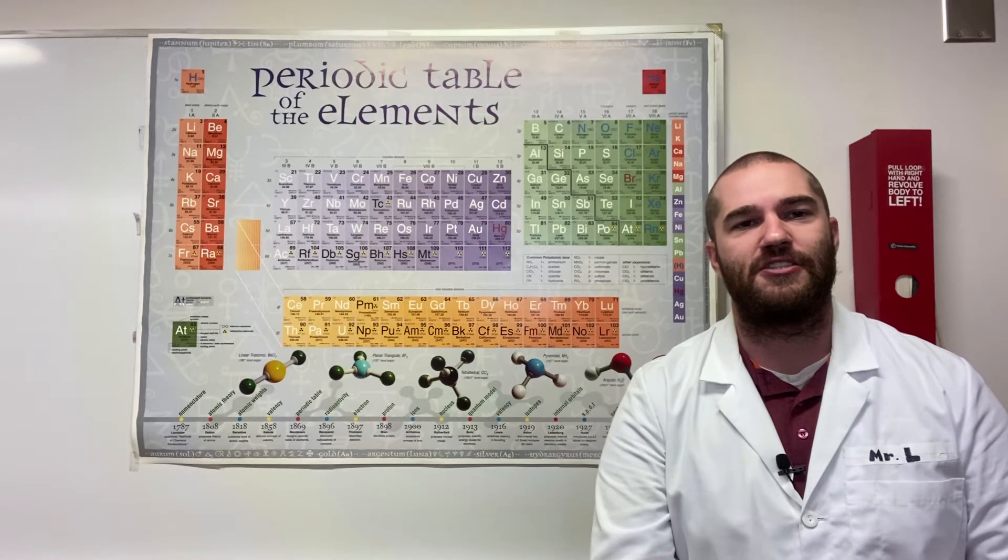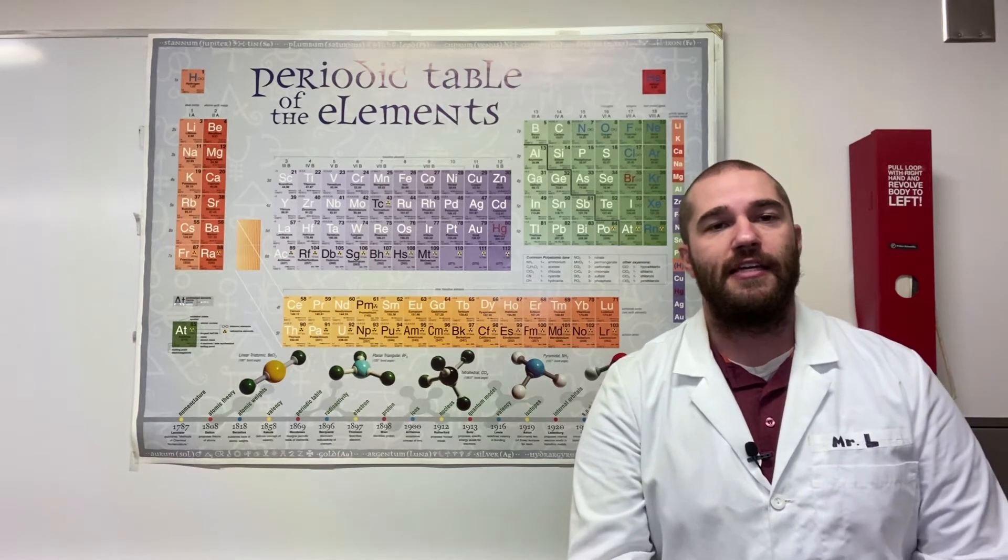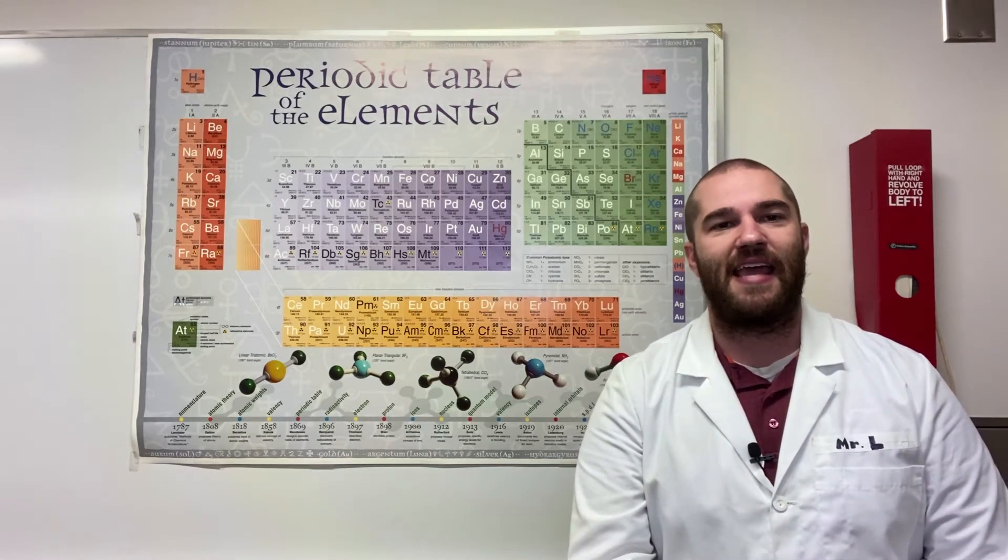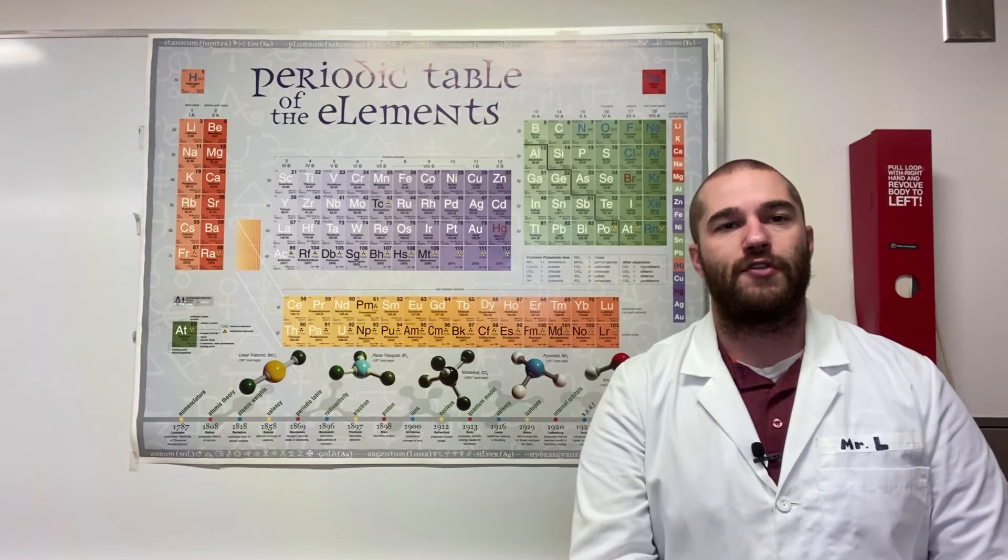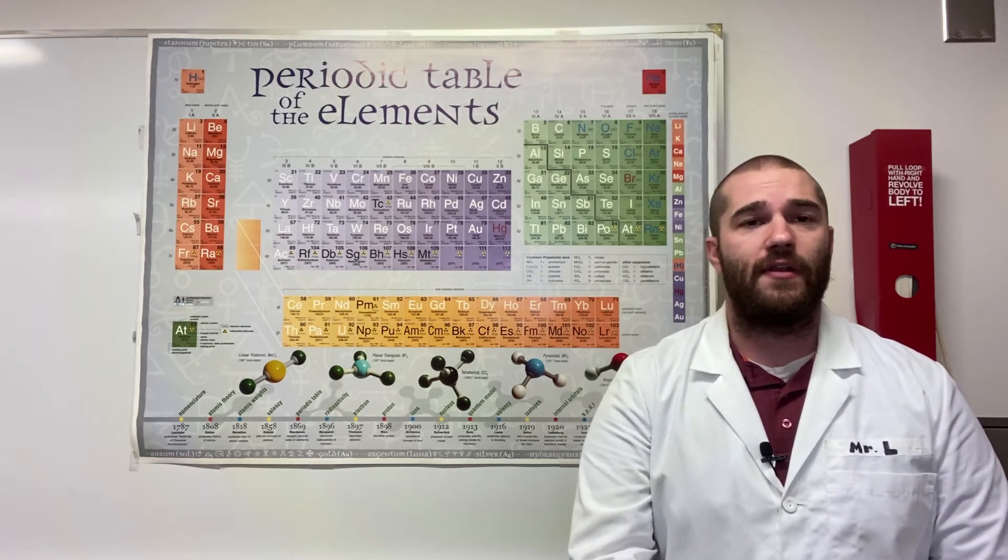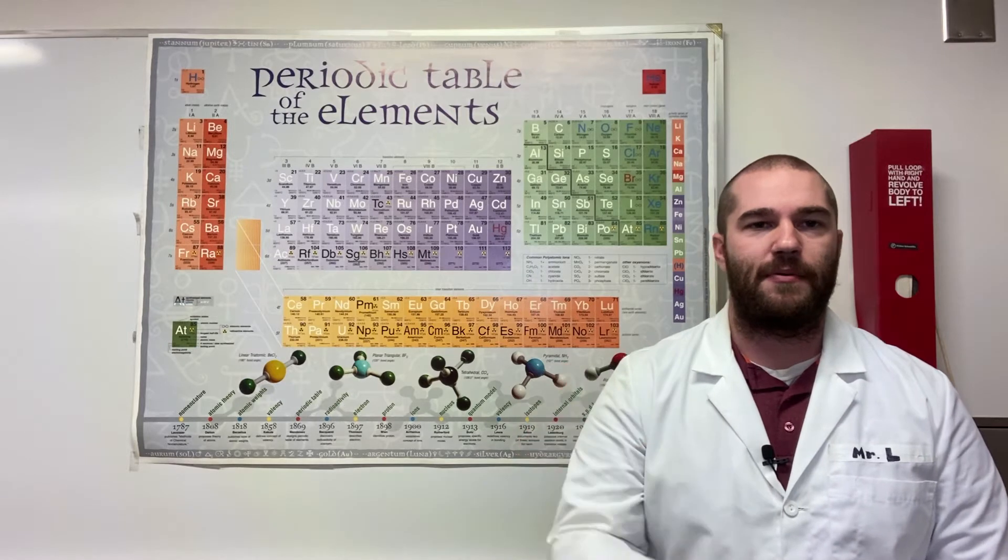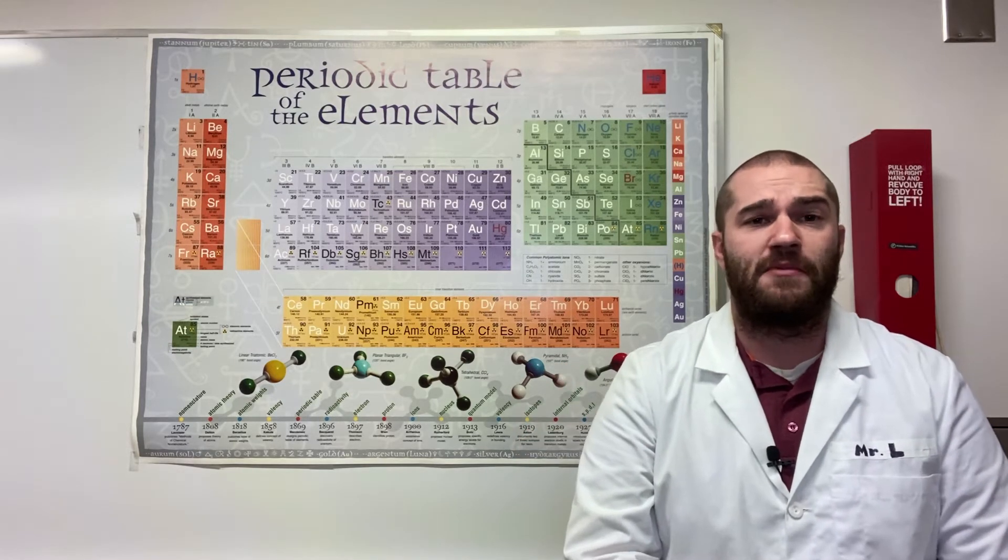And then we had Hund's rule, which states for degenerate energy orbitals, each orbital needs to get an electron with the same spin value before you start to pair them. So the way I like to do electron configurations is just by reading the periodic table, and I find that to be much easier.